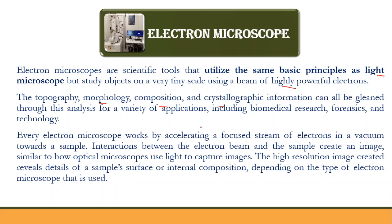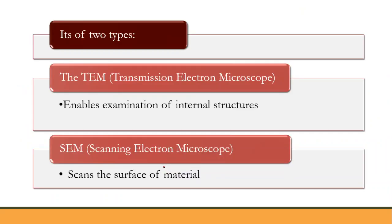Every electron microscope uses a focused beam of electrons which is accelerated towards the sample. You then find out how the sample is interacting with that electron beam and based on that you get images. The resolution of the image is very high, which is why it can reveal internal composition as well.